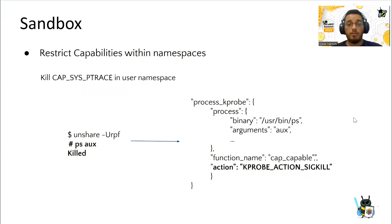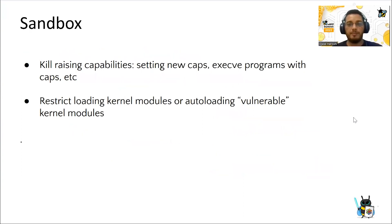Tetragram can also restrict capabilities inside namespaces. This demo shows how a process like PS inside a user namespace, when it tries to access information about other processes, can be killed.